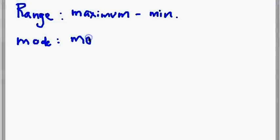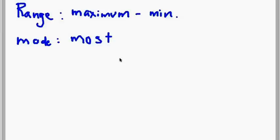The next one I like to go over is mode. Mode is the second easiest to remember because mode sounds just like 'most.' So all you have to remember is mode means finding the number that appears the most in the group of numbers. The keyword there is 'most.'